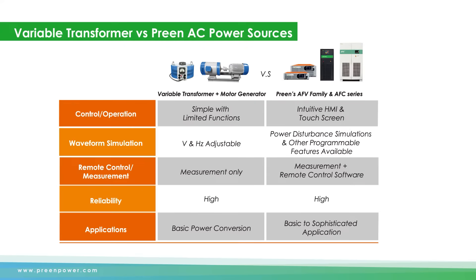Let's take a look at some differences between variable transformers and programmable power sources. Both can adjust voltage, but the programmable power source provides extra functions including programming memory sets, remote controls, accurate measurements, and power line disturbance simulation. Although both products offer high reliability, the variable transformer has basic voltage variation functionality while the programmable AC source offers more sophisticated applications.